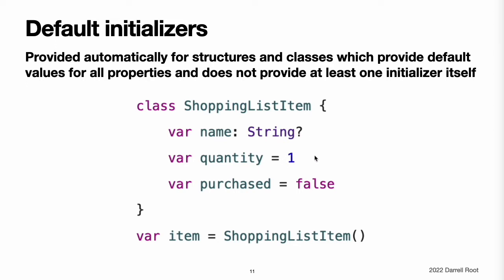Because all properties of the ShoppingListItem class have default values, and because it is a base class with no superclass, ShoppingListItem automatically gains a default initializer implementation that creates a new instance with all of its properties set to their default values. The name property is an optional String property, and so it automatically receives a default value of nil, even though this value is not written in the code. The example uses the default initializer for the ShoppingListItem class to create a new instance with initializer syntax written as ShoppingListItem(), and assigns this new instance to a variable called item.